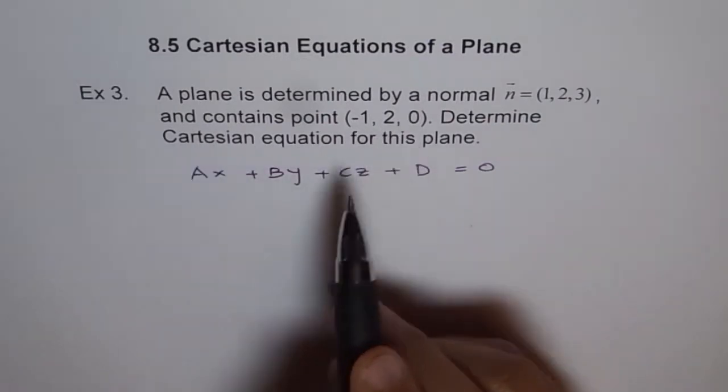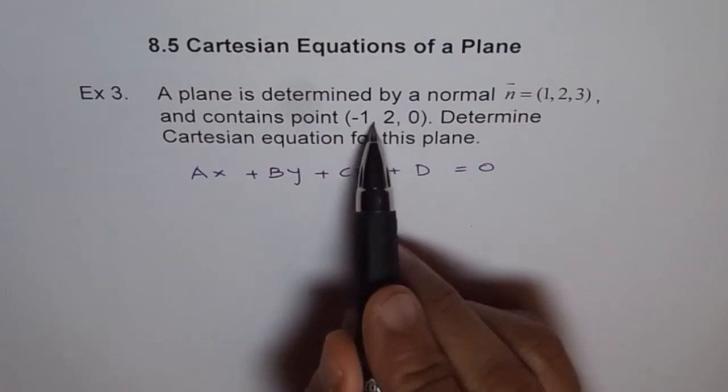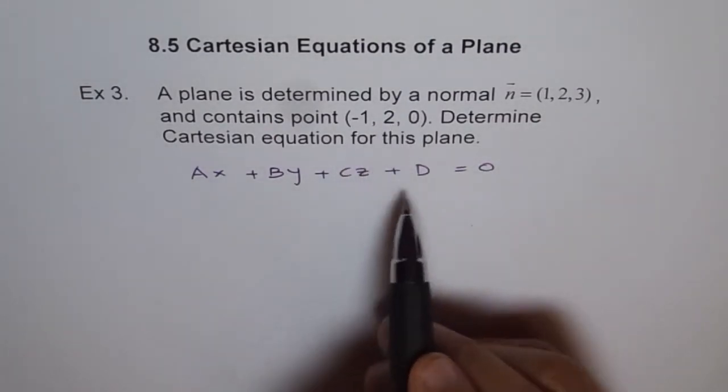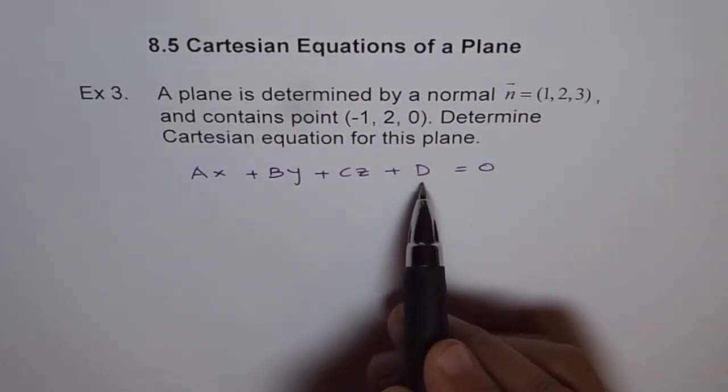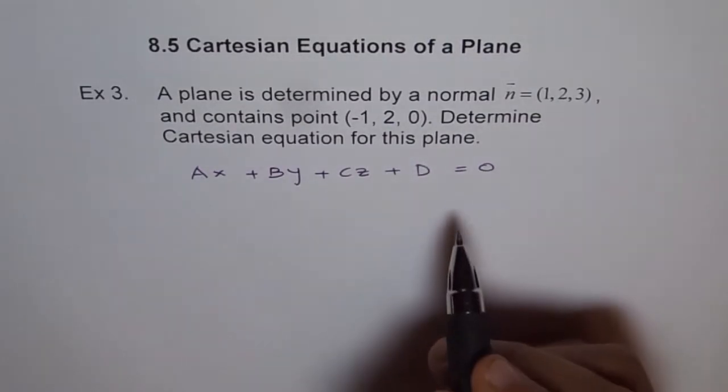And when it contains this point, then x, y, z values can be placed as (-1, 2, 0) which will help us to find D. So that will help us.